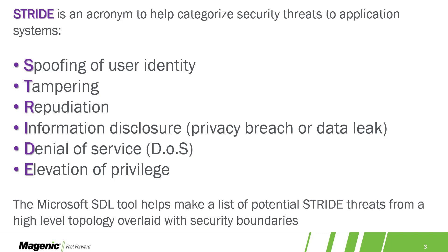Tampering is about manipulating the system to change data in undesirable ways. Tampering can take many forms and many vectors. It can be on the wire. It can be exploiting a security gap in a form that allows you to change data. It can be unprotected APIs, all sorts of things.